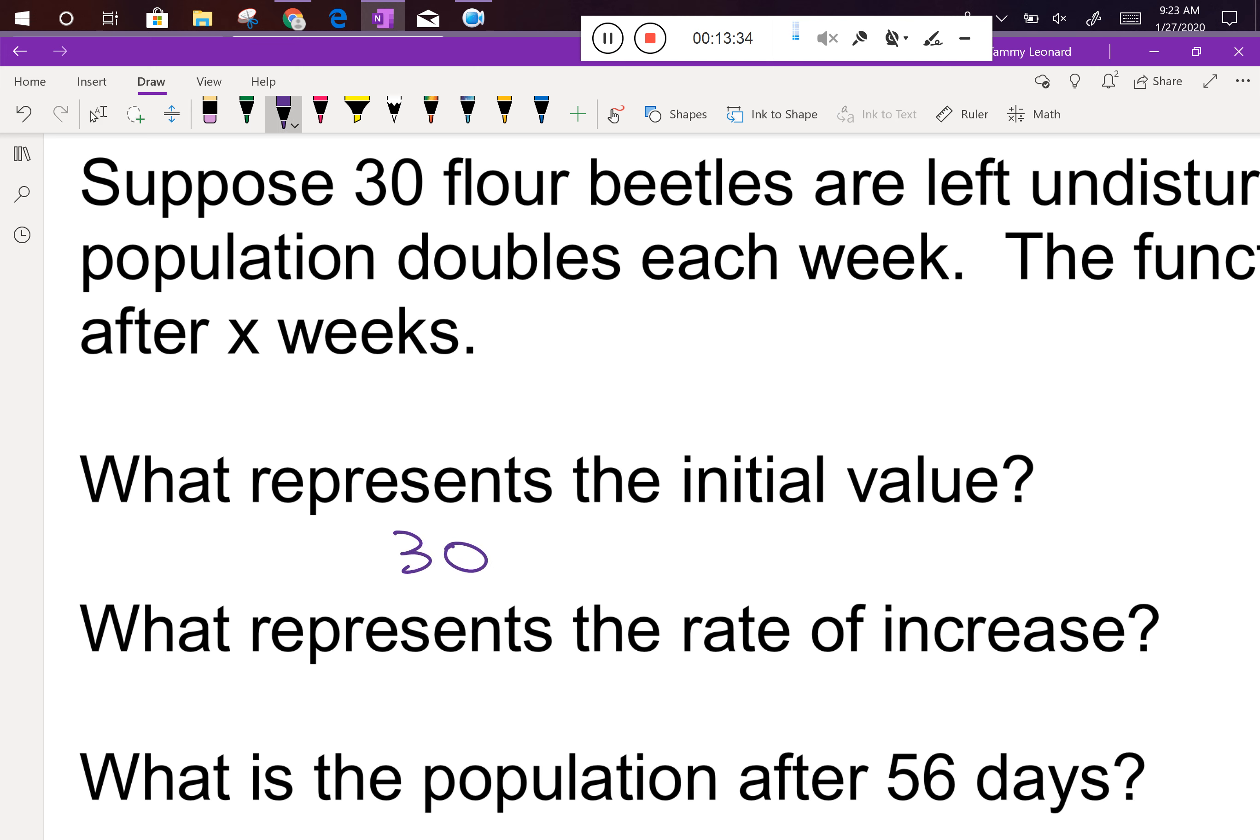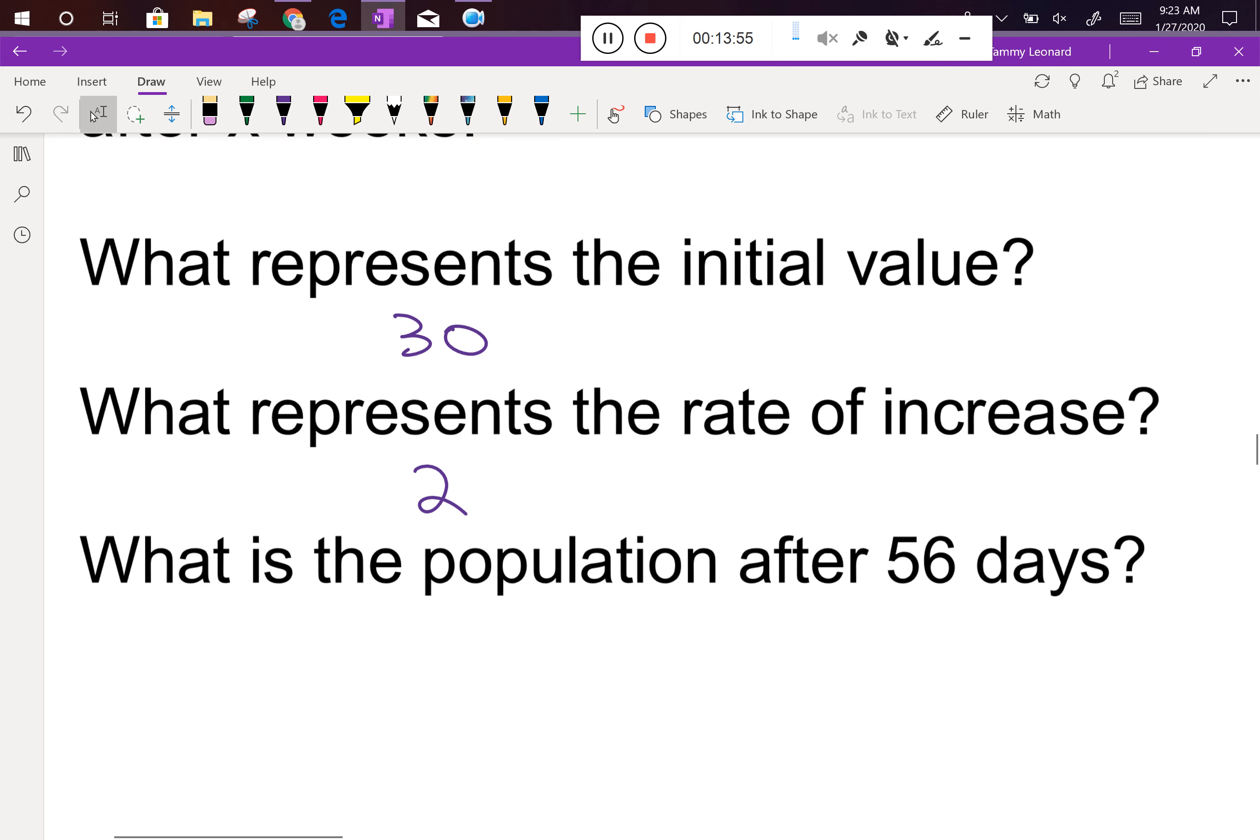How many beetles were there when we started? 30. What represents the rate of increase? How is this population growing? What number? Two, right? It's doubling every week. So the 30 is the initial value and the two is the rate of increase. It's how much it's getting more and more by. Now here's a fancy question with a trick built in. I'm giving you a trick on the very first question. What am I thinking? You're going to be okay though. You can totally handle this one.